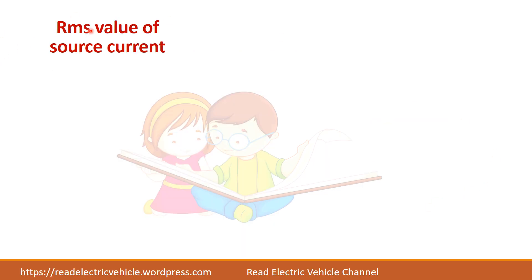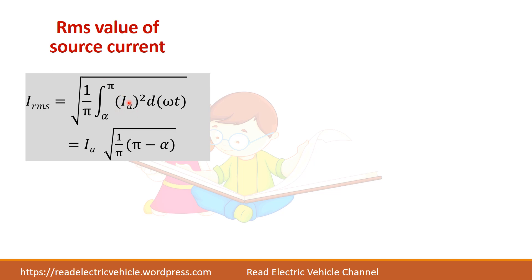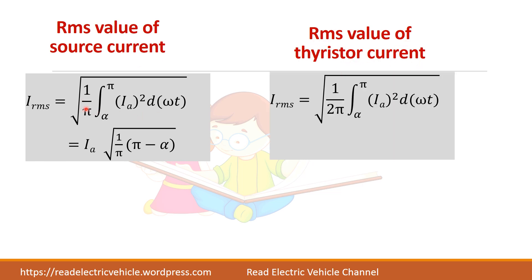Next we will derive for RMS value of source current. So source current is Ia only. So RMS value 1 by pi integral of alpha 2 pi Ia square into dF omega t. It is simple. It is a constant. Take it out. So apply the limits. So this is RMS value of source current. Now if you see the RMS value of thyristor current. Here we have taken half cycle. Because source current occurs in both the half cycles. So half cycle is enough. But if you take a thyristor current.